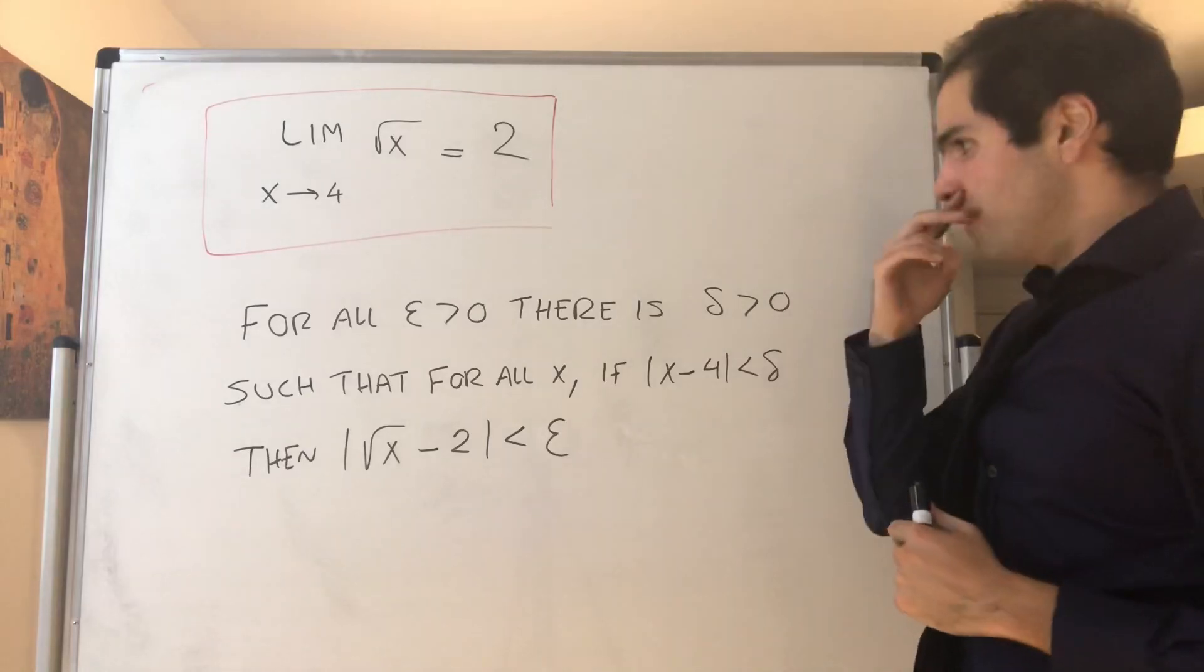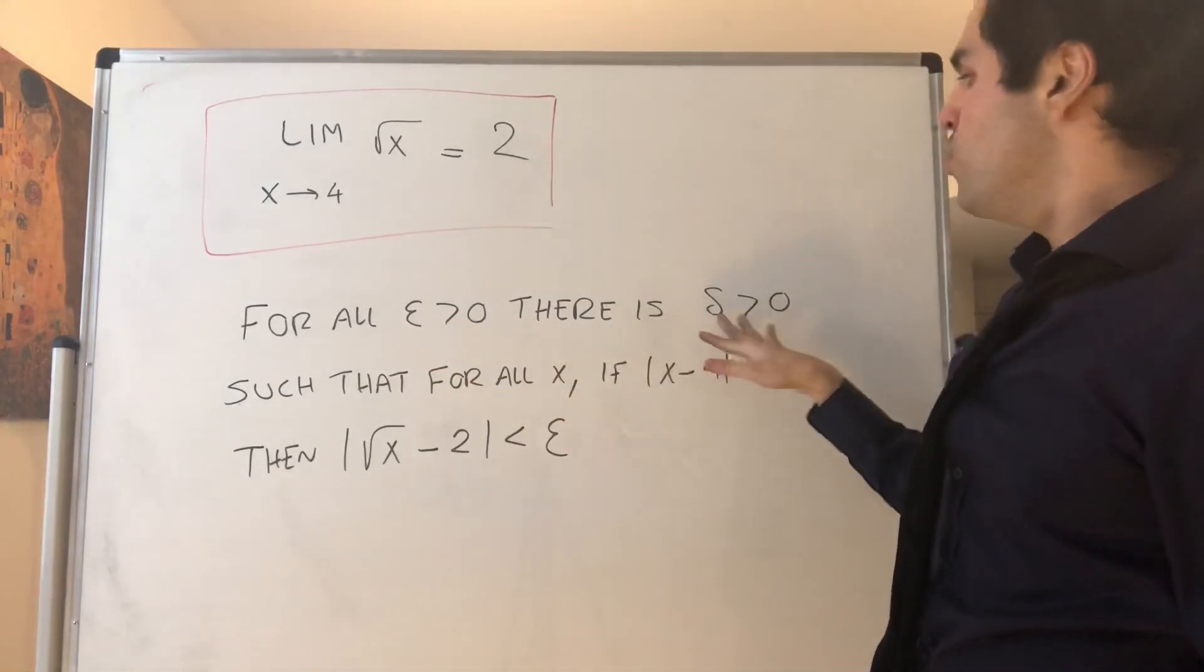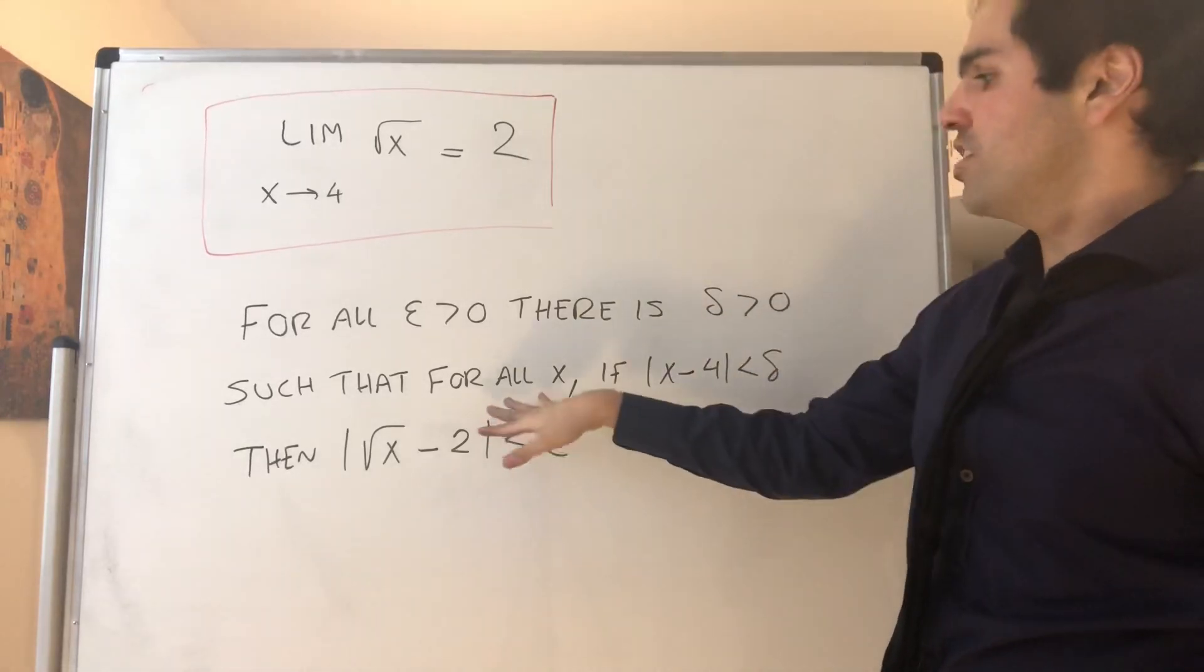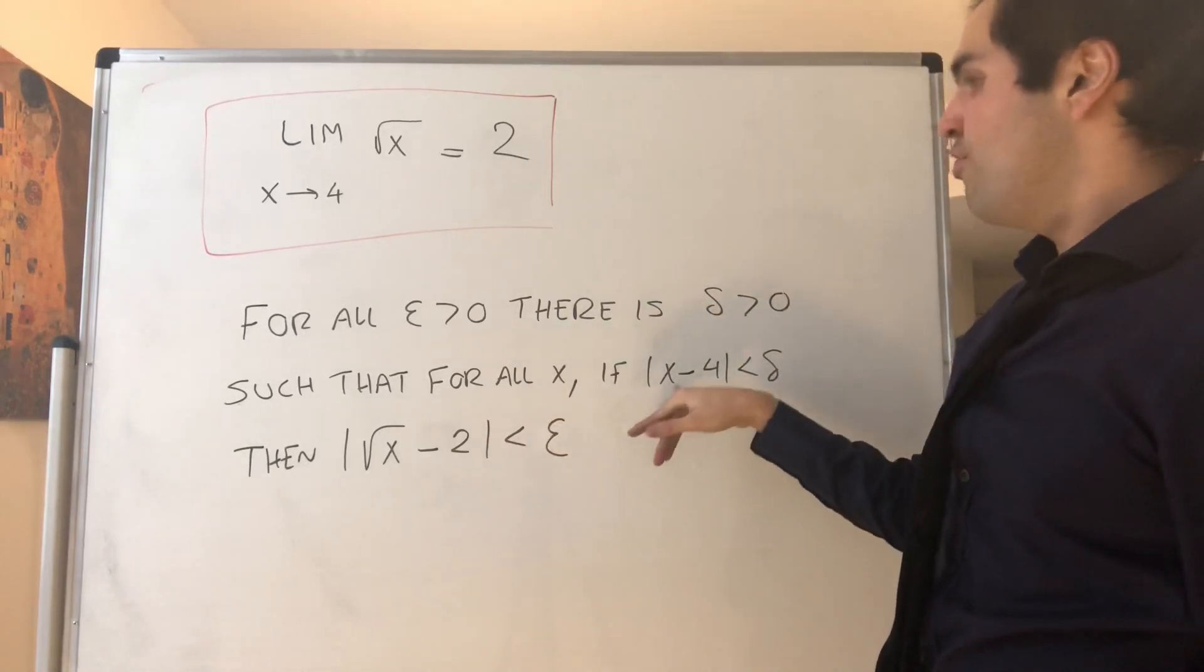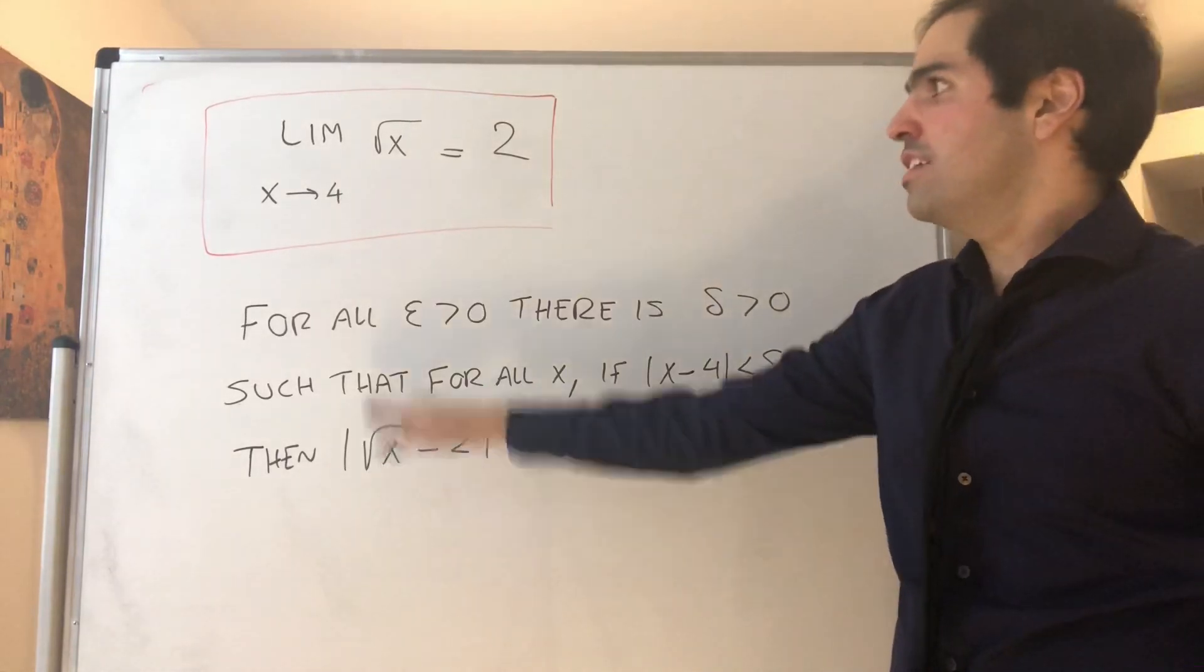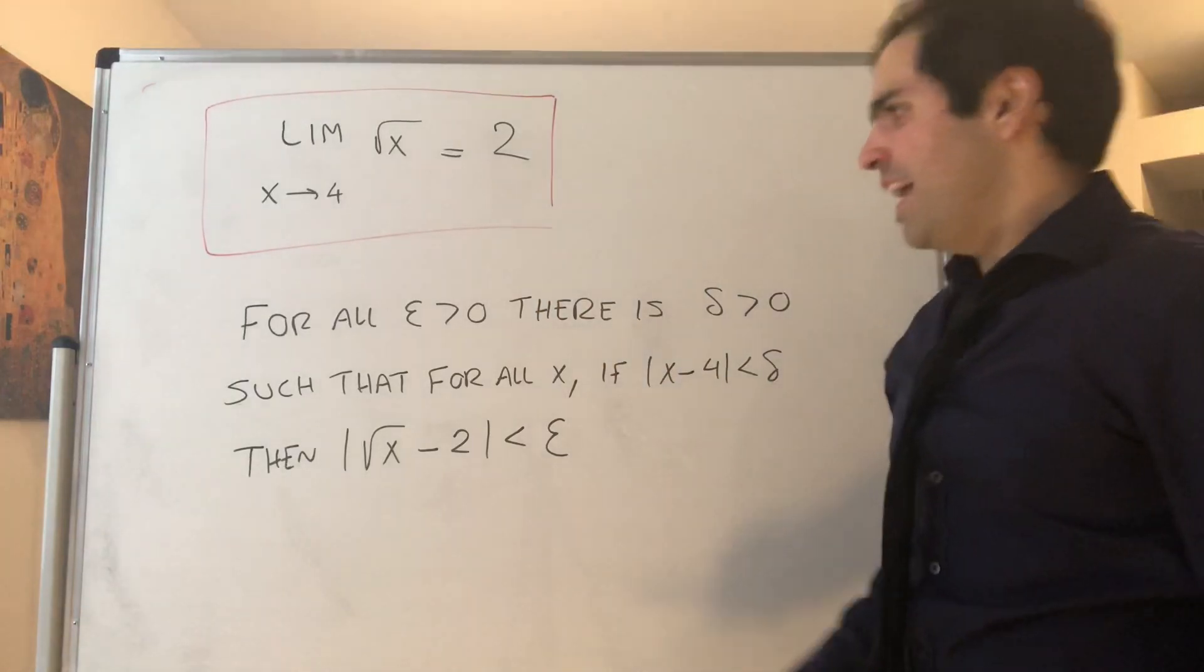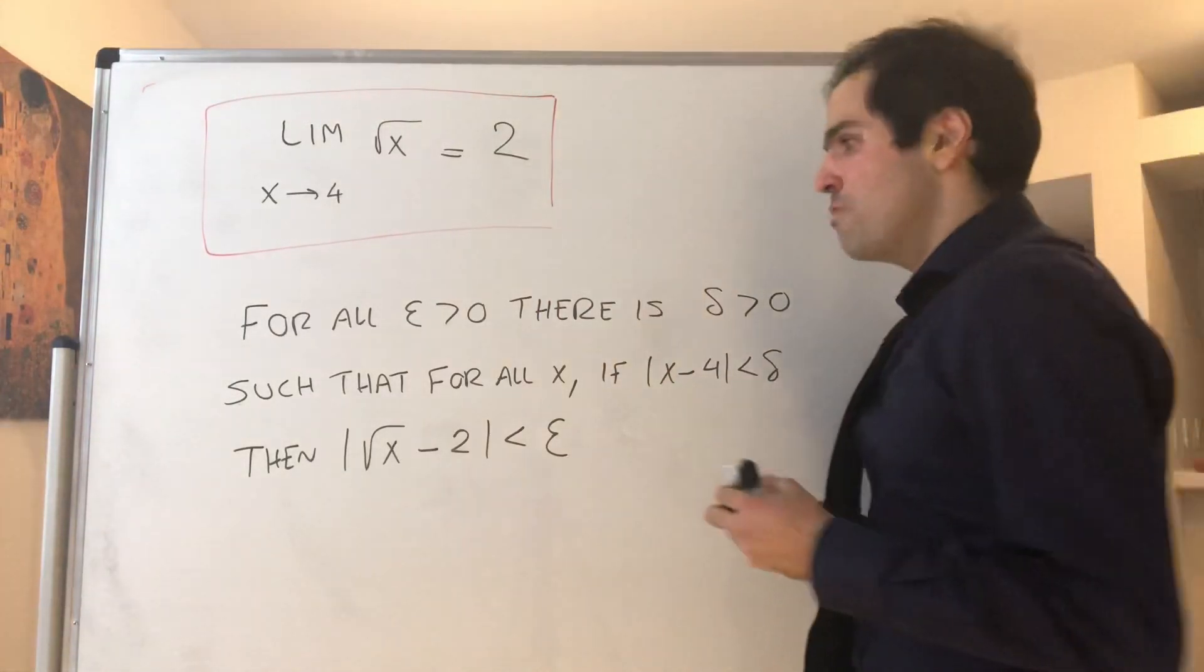Let me remind you what the epsilon-delta definition says. It says that for all epsilon, we can find some delta such that for all x, if x minus 4 is less than delta in absolute value, then square root of x minus 2 is less than epsilon. And as usual, here's how we play.